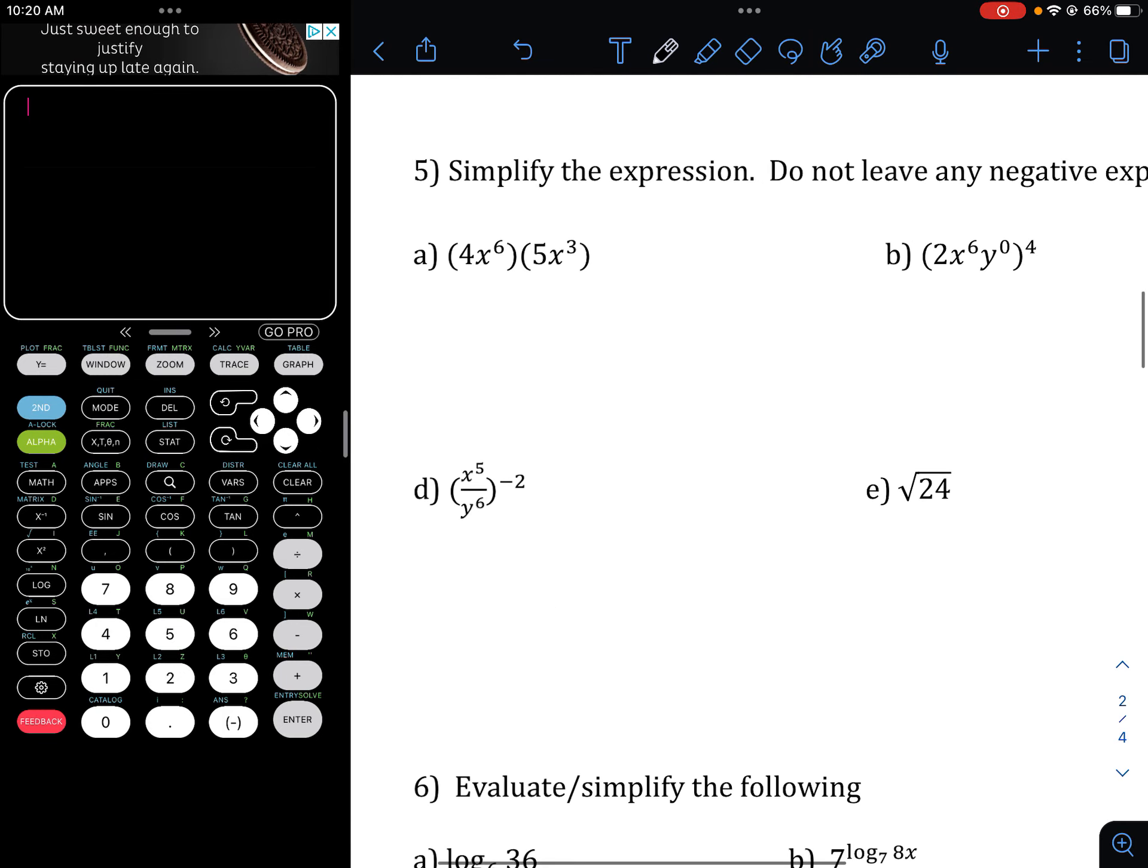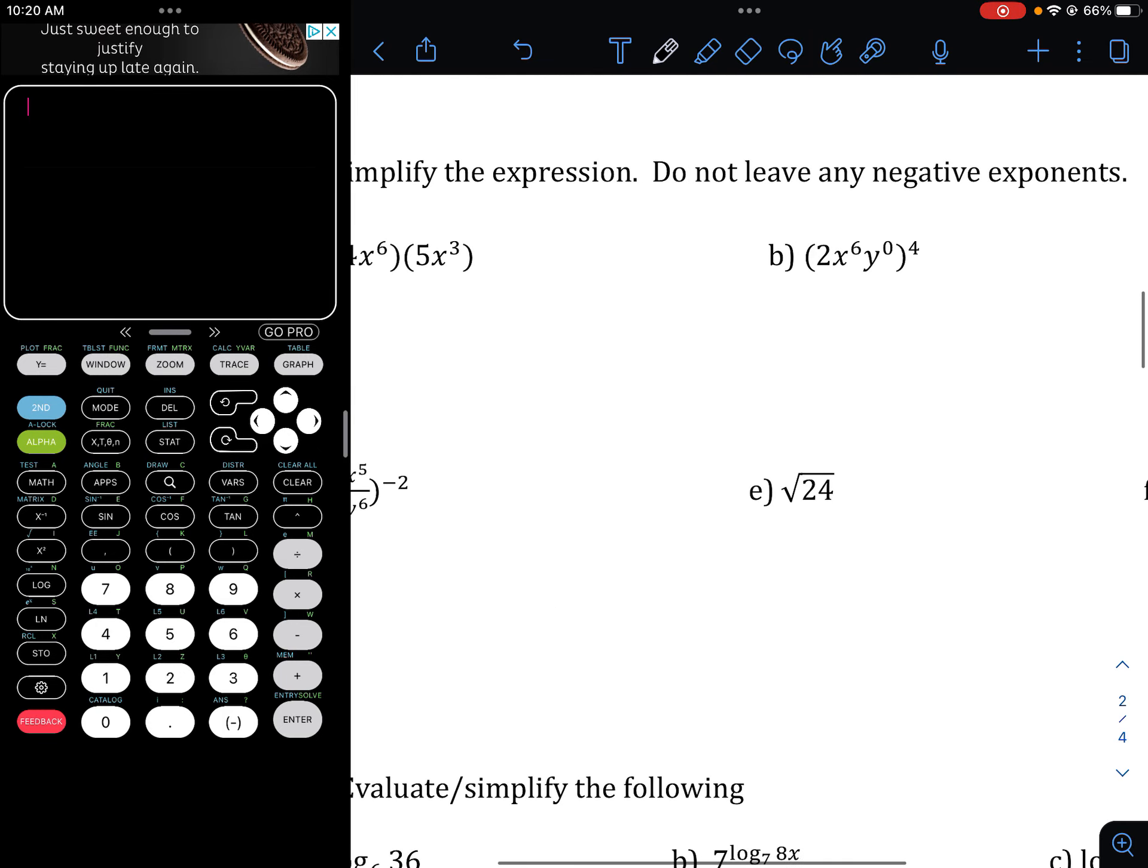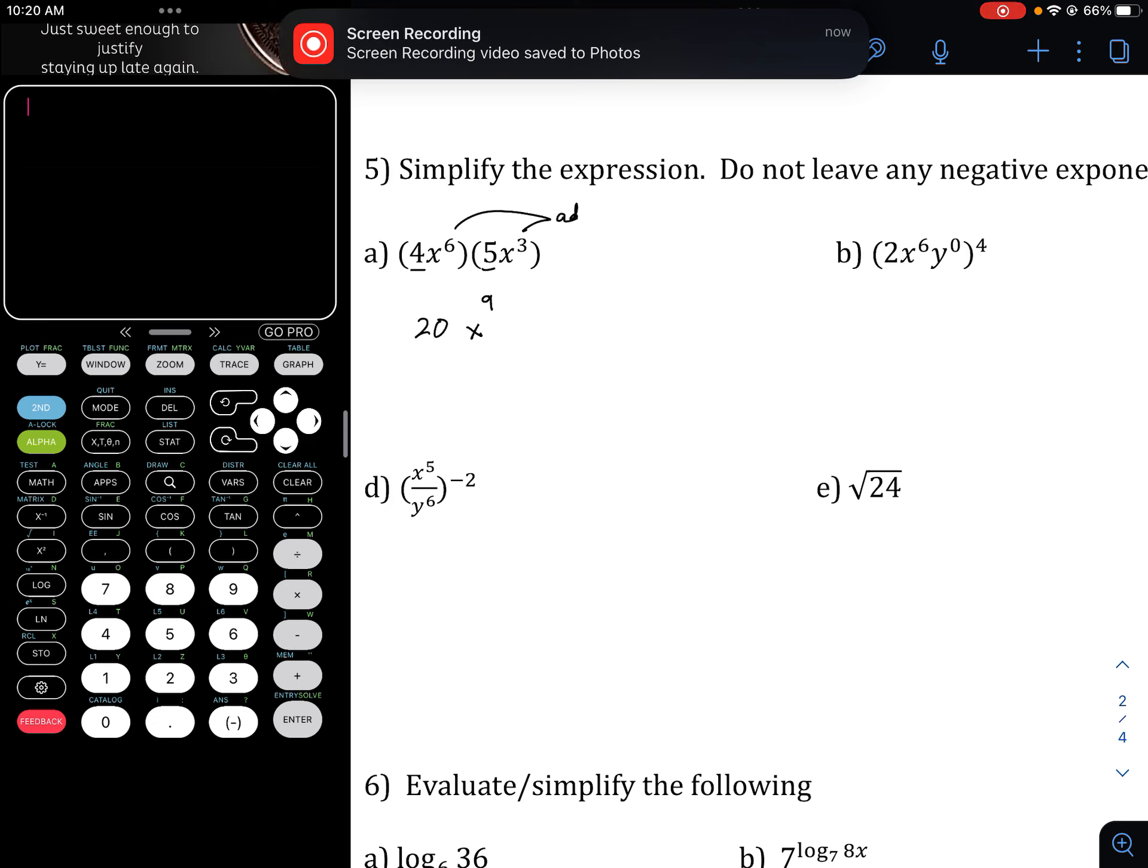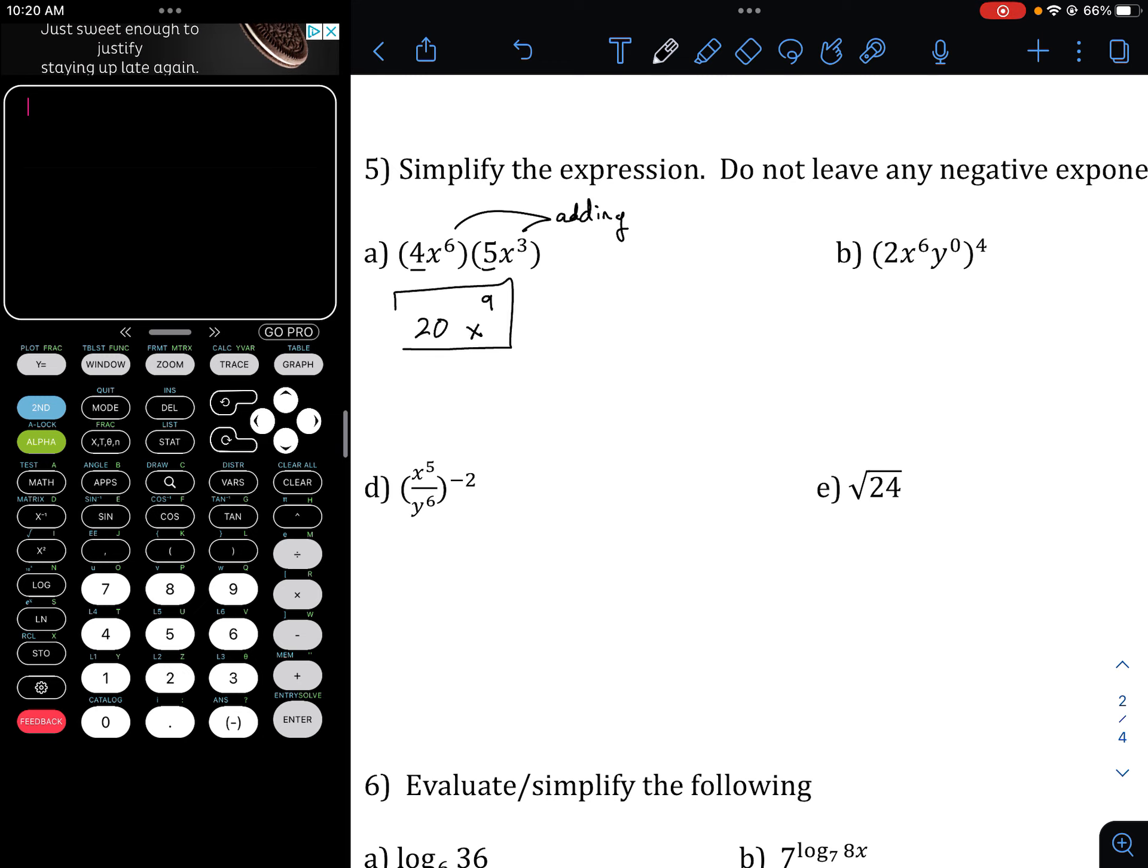And here's page two guys, so simplify expression, don't leave any negative exponents. Let's just remember how to do these, so 4 times 5, that's just 20. Remember x to the 6th and x to the 3rd, that's going to be x to the 9th, so we're adding those exponents. 20 x to the 9th.